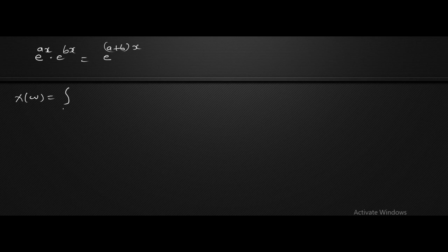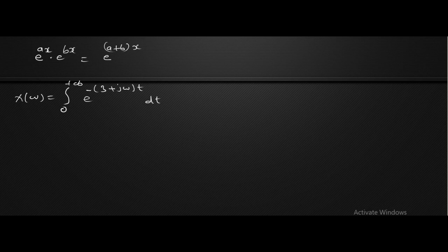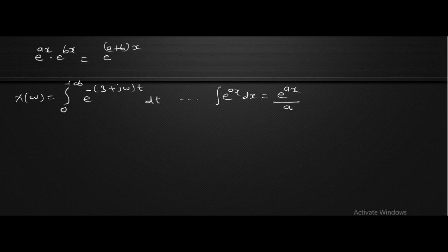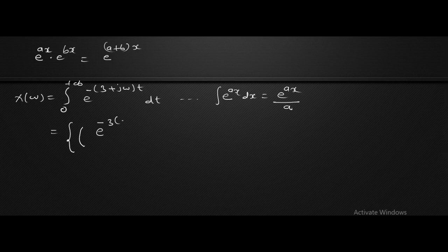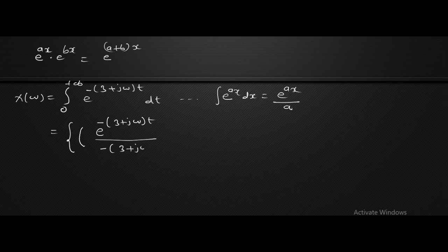X of omega becomes the integral from 0 to plus infinity of e raised to minus (3 plus j omega) t, dt. We find the integration using the relation: the integral of e raised to ax dx equals e raised to ax divided by a. Here the coefficient is minus (3 plus j omega). So the integral gives e raised to minus (3 plus j omega) t, divided by minus (3 plus j omega), evaluated from 0 to plus infinity.